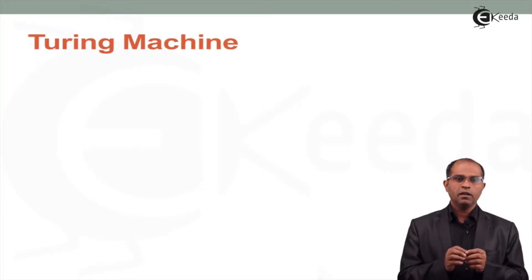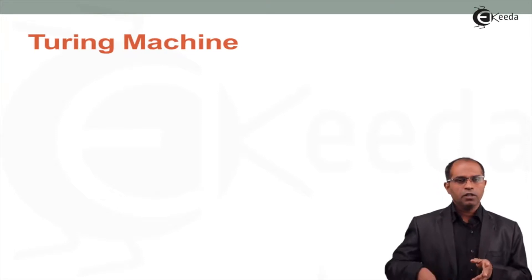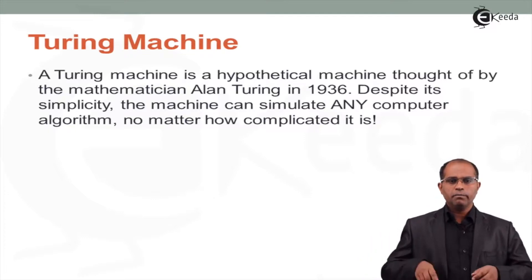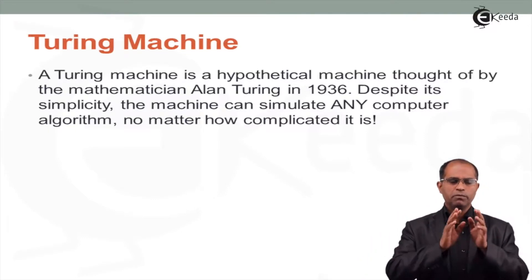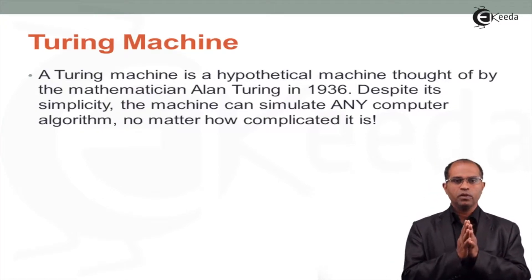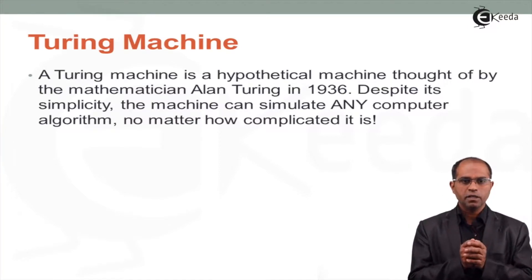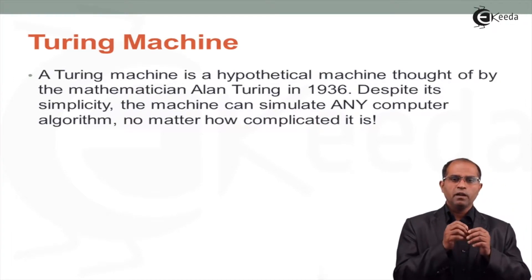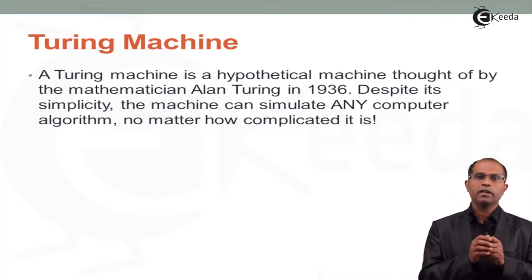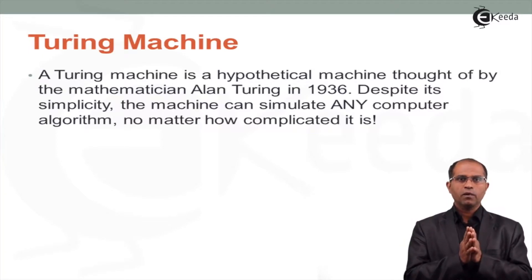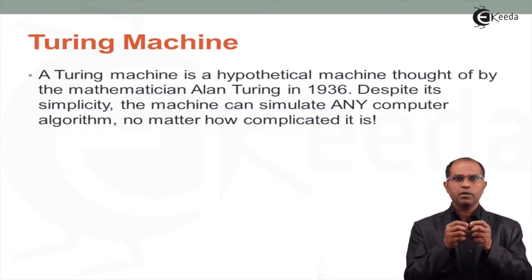Alan Turing was a mathematician who proposed a hypothetical machine — a mathematical module — which can perform mathematical tasks. This concept was introduced by Alan Turing in 1936. Despite its simplicity, this machine can simulate any computer algorithm, no matter how complicated.